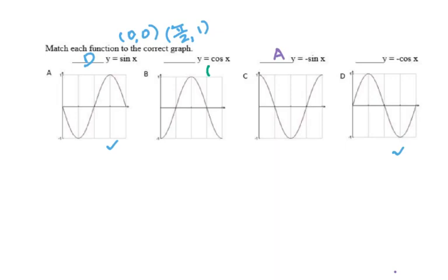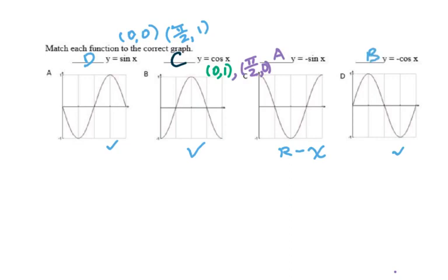For cosine x, we know when x equals zero, y will be one, because cosine zero equals one. Then x equals pi over two, cosine pi over two is zero. Therefore, C will be the answer. For y equals negative cosine x, that means this graph is reflected across the x-axis, so we got B. Then try to remember each pattern — it's very critical for you to remember this pattern when you graph a sine and cosine function.